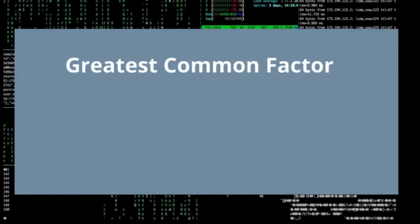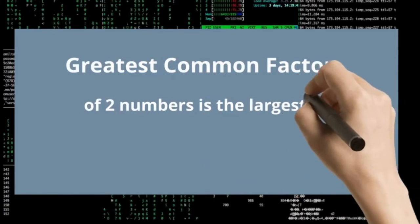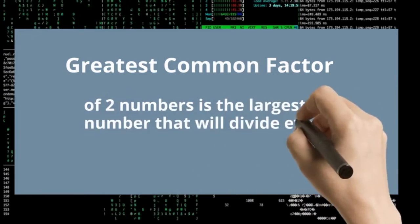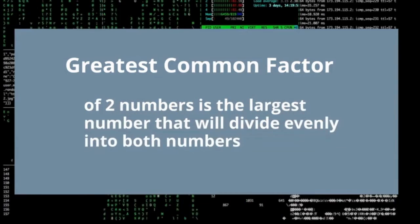The greatest common factor of 2 numbers is the largest number that divides evenly into both of these numbers. So let's get started. Let's find the greatest common factor of 6 and 8.